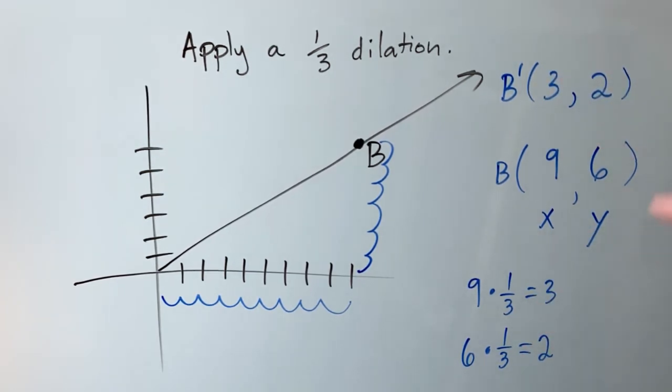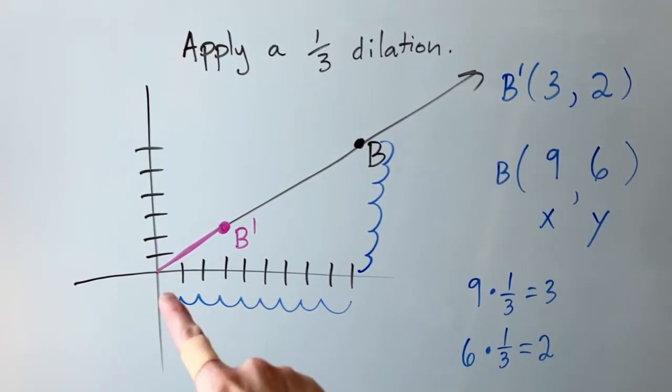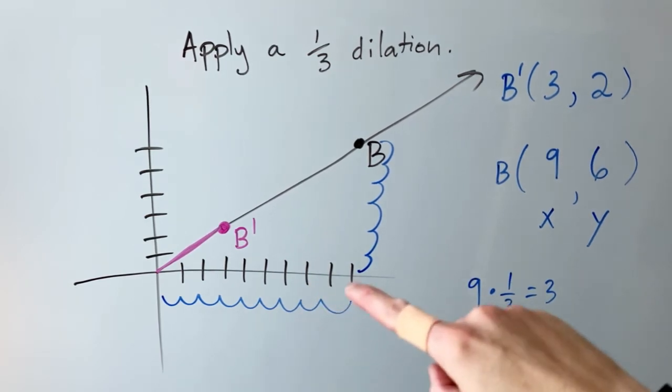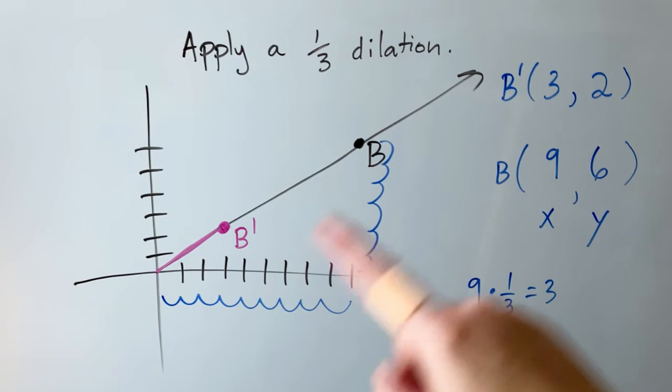So now let's plot the point three, two on the original picture. So three, two is going to be here because you go three to the right and then two up. And it's not a coincidence that the new point is on the original line. That should happen sometimes.